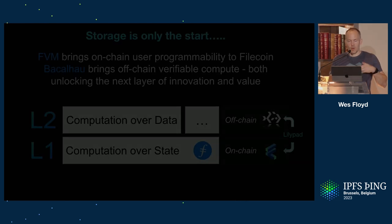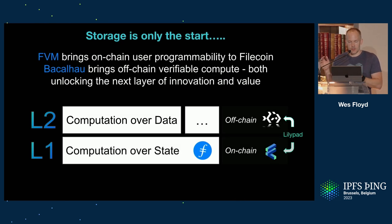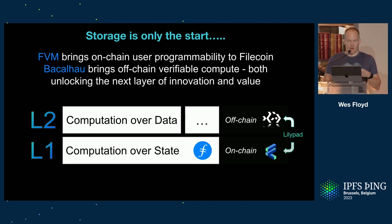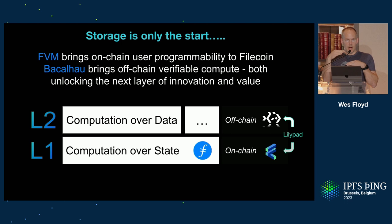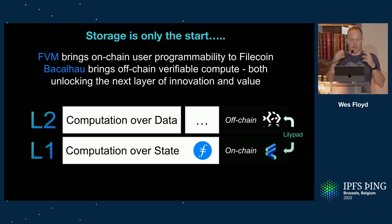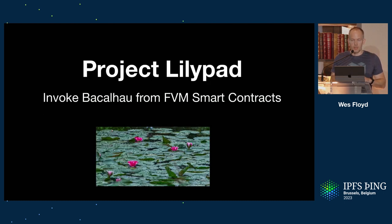Let's walk our way up the stack. Irina gave you some perspective on Bacalhau, which is compute over data — you can think of it as sort of an L2. It has a lot of ties to EVM. If L1 is the Filecoin chain or the virtual machine there, Bacalhau would exist as a layer on top of it. This is the mental model of compute I want you to have.